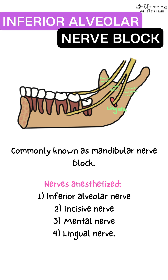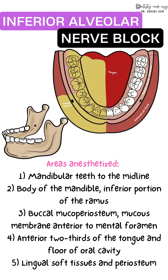The nerves it anesthetizes — as already seen in the trigeminal nerve video — are the branches of the inferior alveolar nerve. This block will anesthetize the inferior alveolar nerve itself, as the name says, and then its branches: the incisive nerve, the mental nerve, and also the lingual nerve.